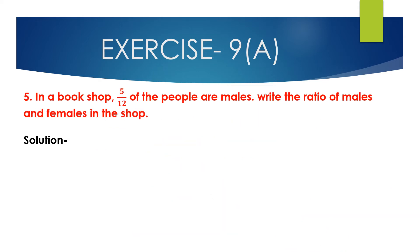Now question number 5. In a book shop, 5/12 of the people are males. Write the ratio of males to females in the shop. So 5/12 of the people are males, meaning the number of males is 5 and the total number of people is 12.